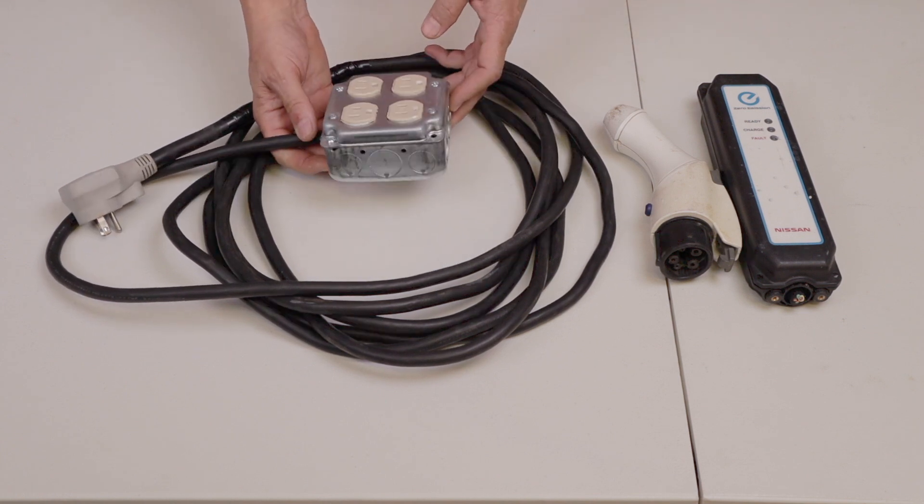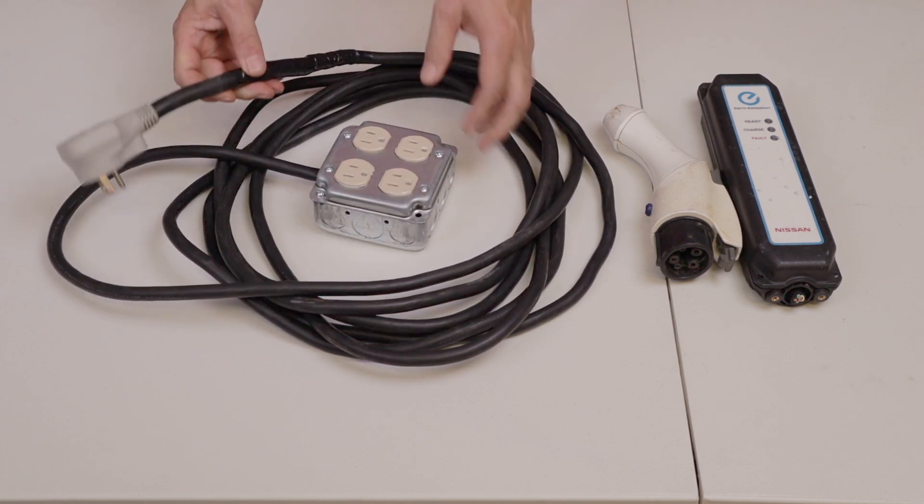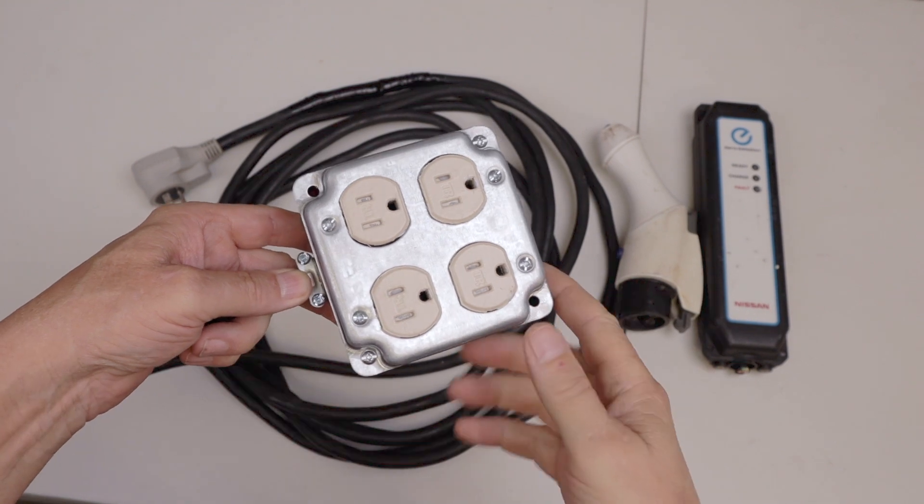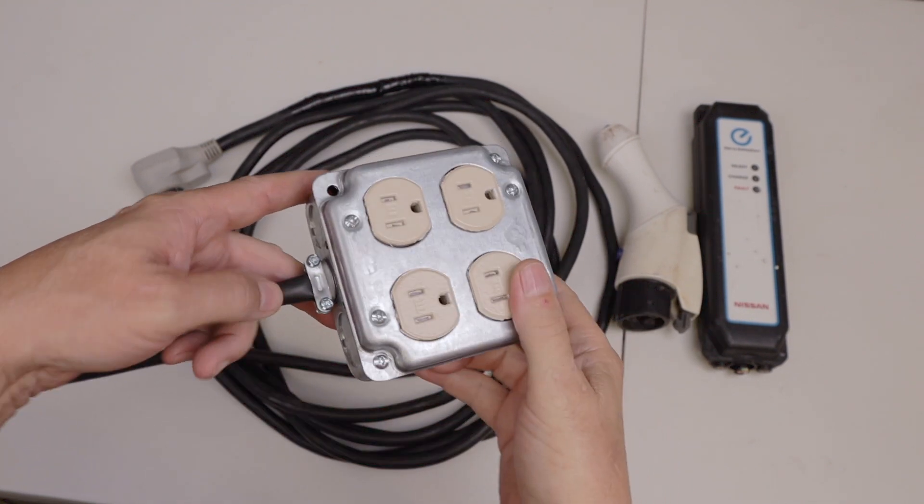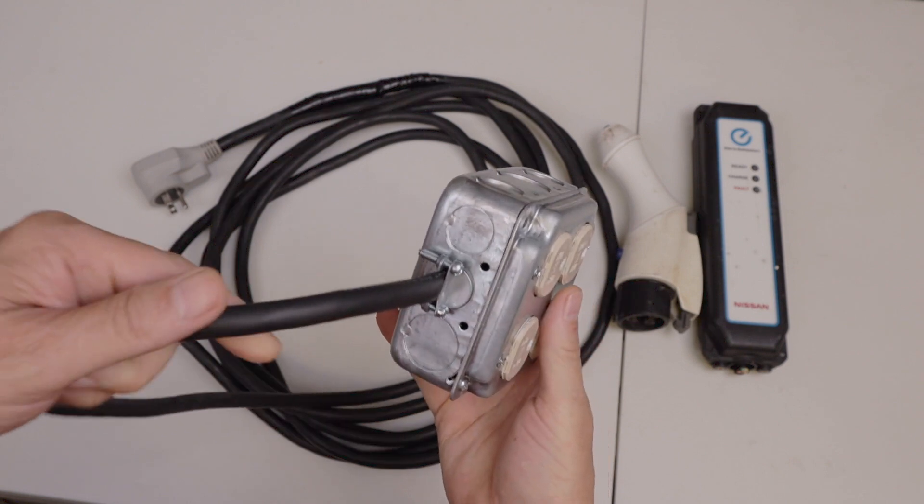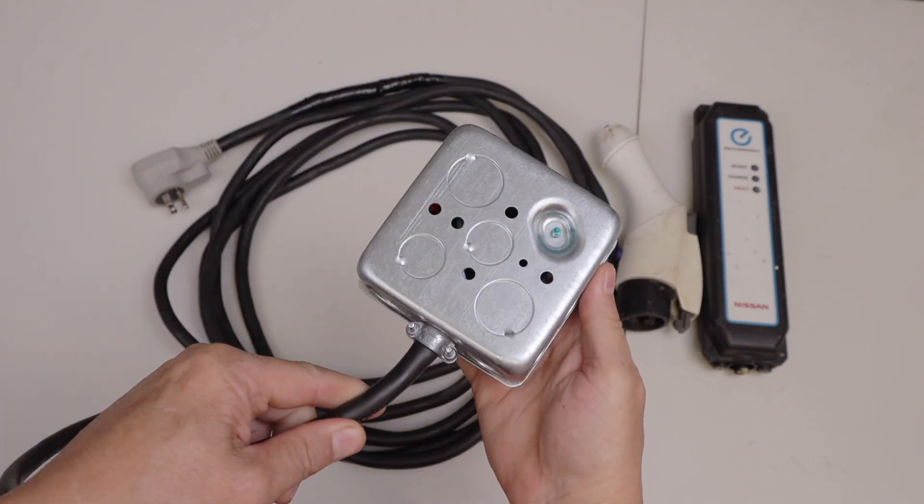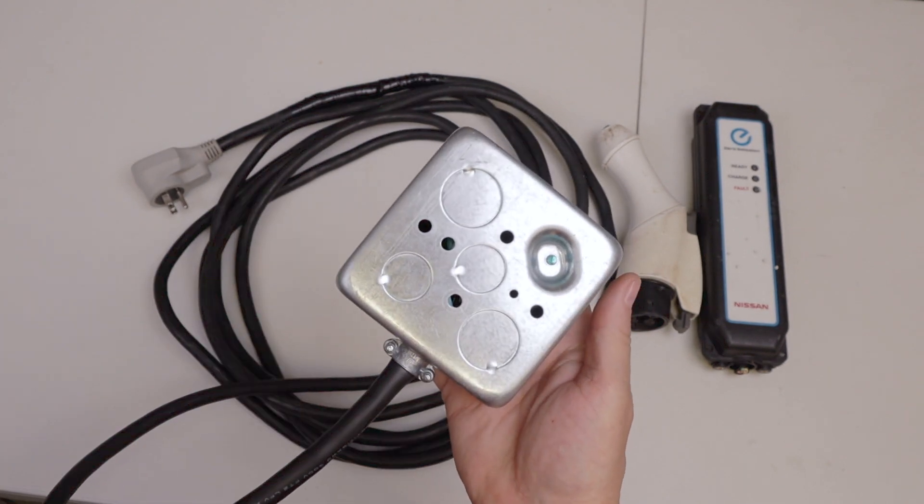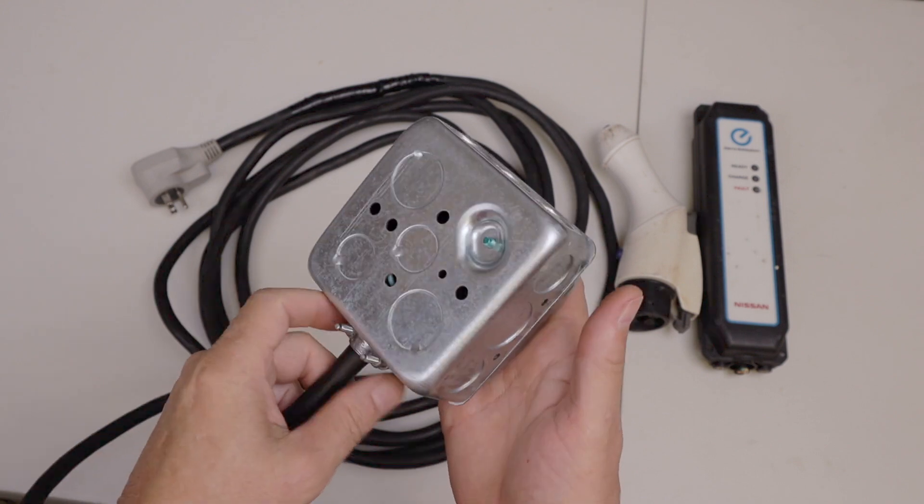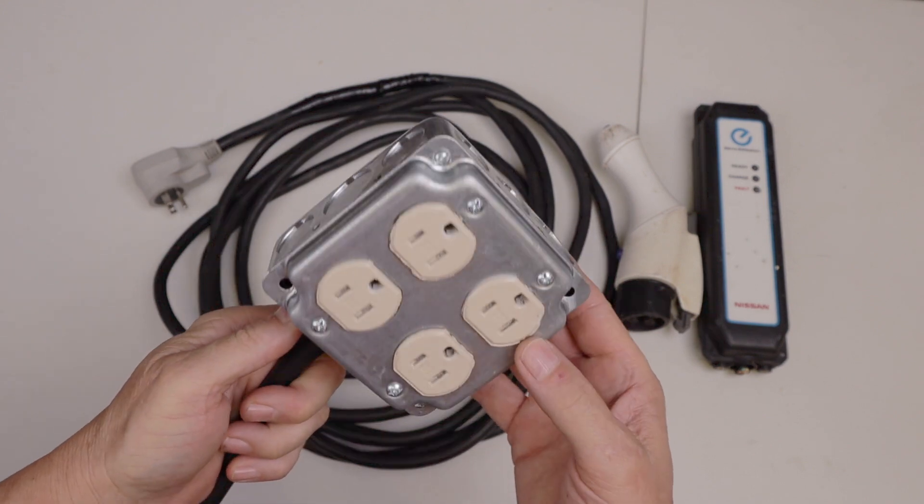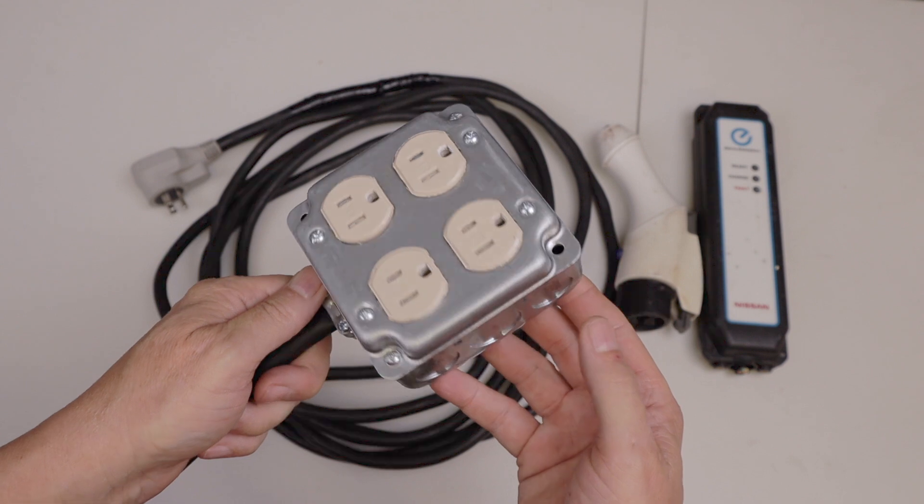A couple things to mention about one of these quad box type extension cords. I determined that the wiring inside this broken electric car charger is 12-gauge wire. So this is good for 20 amps. So really, 20 amps total. And that includes all four outlets.